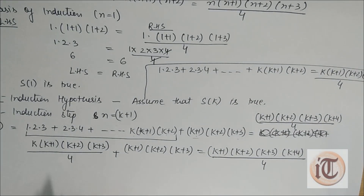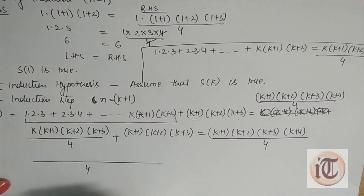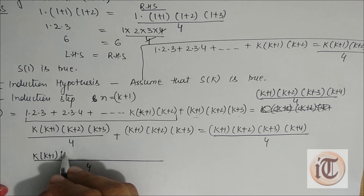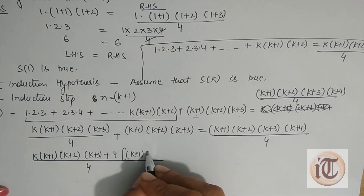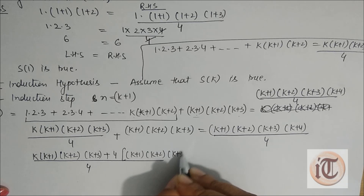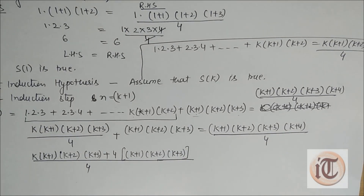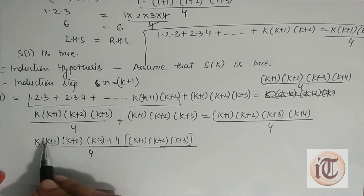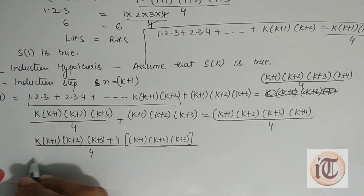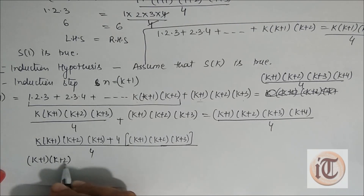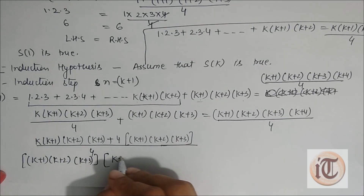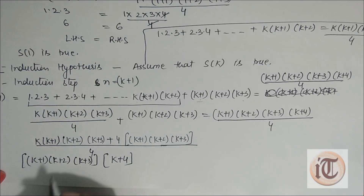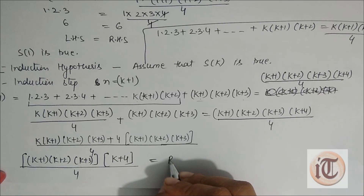Solving the left hand side, we take LCM of 4. Taking (K+1)(K+2)(K+3) as common, we get (K+1)(K+2)(K+3) · (K + 4) / 4, which equals the right hand side. Therefore left hand side equals right hand side.